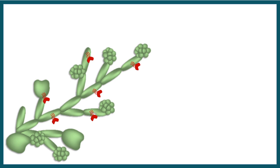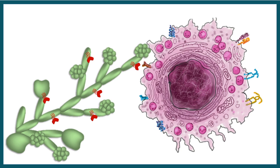Fungal species can be opsonized by complement proteins. Here you can see complement proteins coating Candida albicans. When complement proteins decorate the outer surface, macrophages — which have complement receptors — can bind to these proteins, and the end result is engulfment of the fungus by macrophages.